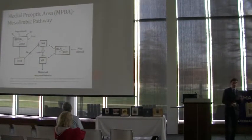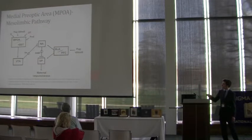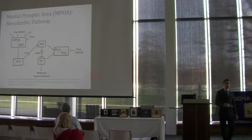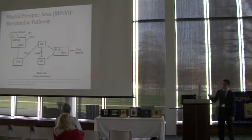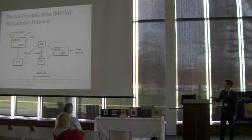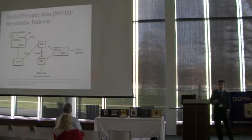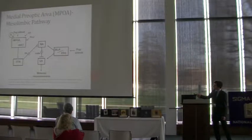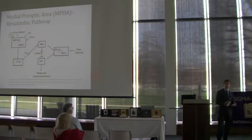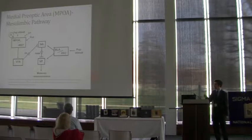In this pathway, there are three stimuli that will activate it: oxytocin, pup stimuli through touch, smell, or hearing, and estrogen. Estrogen is the key component to this pathway. When estrogen comes in, it will bind to the estrogen alpha receptors in the MPOA. Once these receptors are activated, it actually initiates the production of the oxytocin receptor, so it allows the MPOA to be activated by oxytocin.